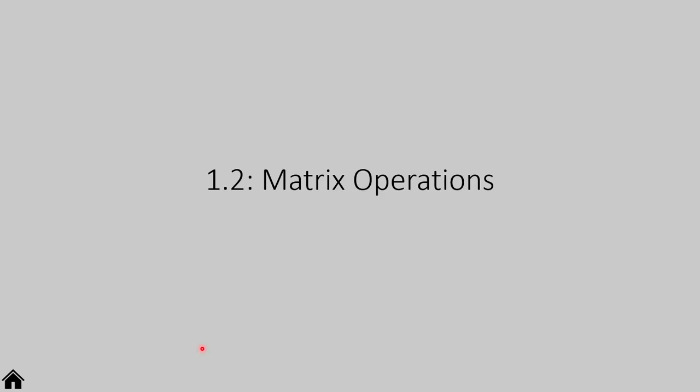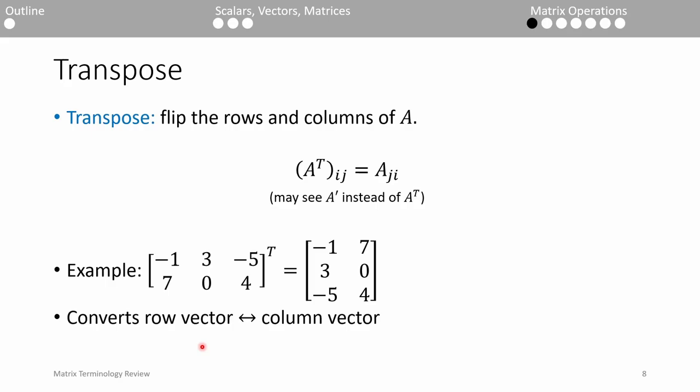Now that we've covered the basic definitions, let's see what mathematical operations we can apply. The transpose is a simple but very important operation. To transpose a vector or matrix A, you just flip the rows and columns. You'll commonly see the exponent T to denote the transpose, but you might also see an apostrophe.